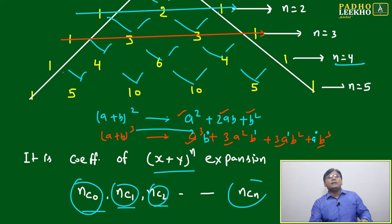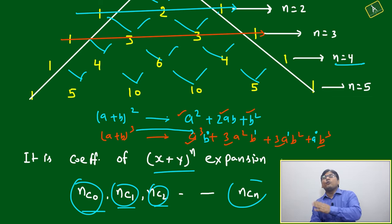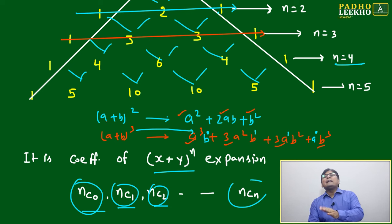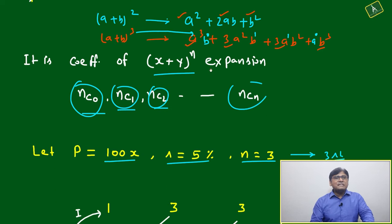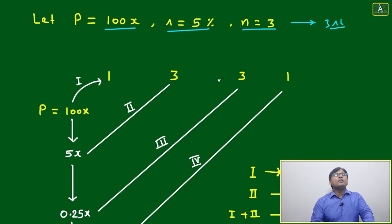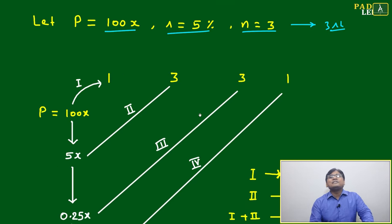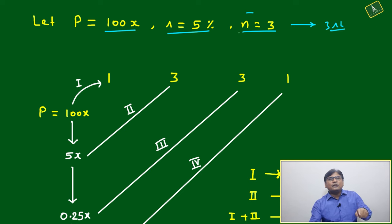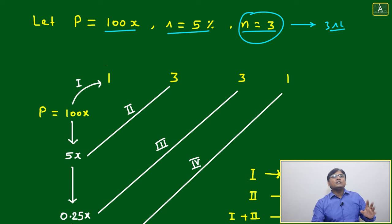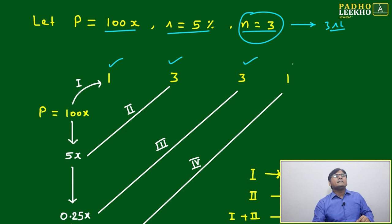If number of years is 5, the Pascal's triangle row is 1, 5, 10, 10, 5, 1. This is especially helpful to find the difference between compound interest and simple interest. For n equal to 3, you write 1, 3, 3, 1.